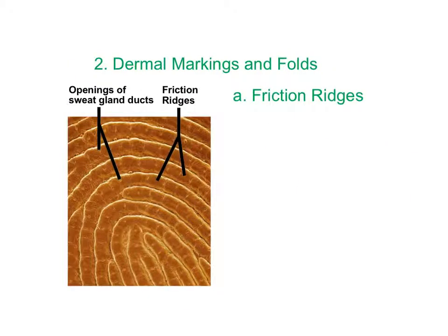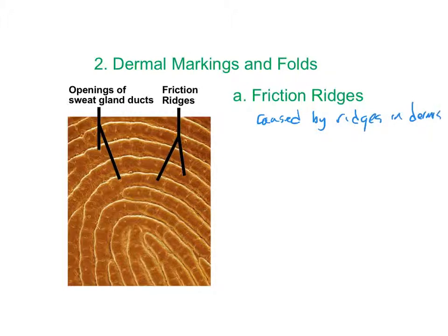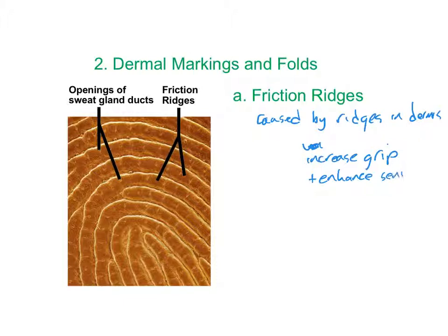Some features of the skin arise from the dermis. The first are friction ridges — what we see in fingerprints, also found on the soles of the feet. These are caused by larger ridges in the underlying dermis and they increase our ability to grip a surface and are also thought to enhance our sense of touch. They are found on the palms of the hands and soles of the feet.